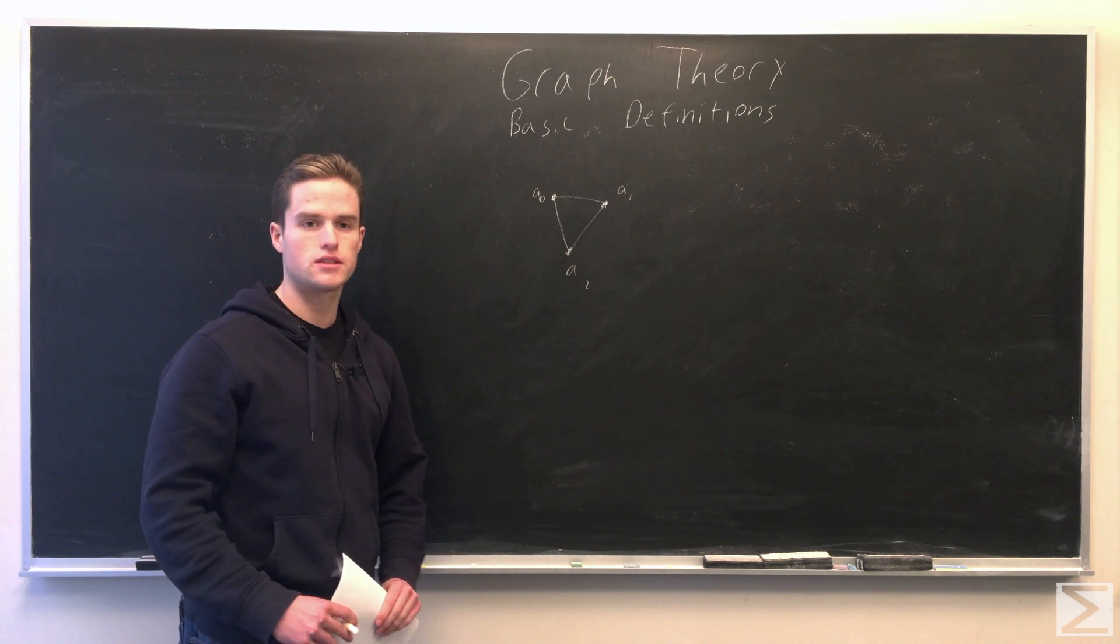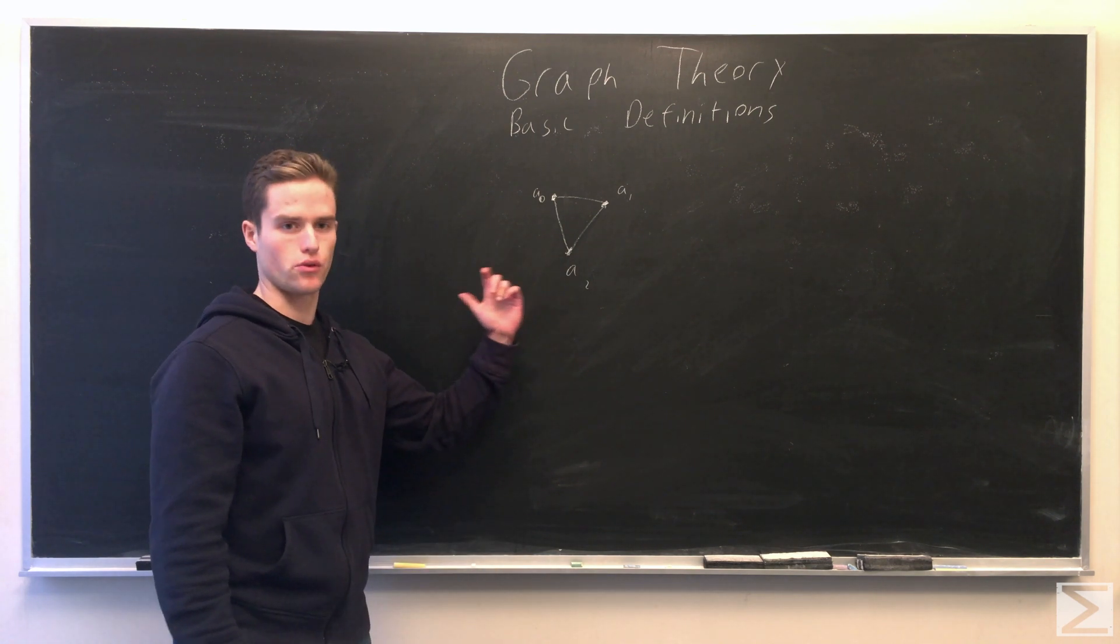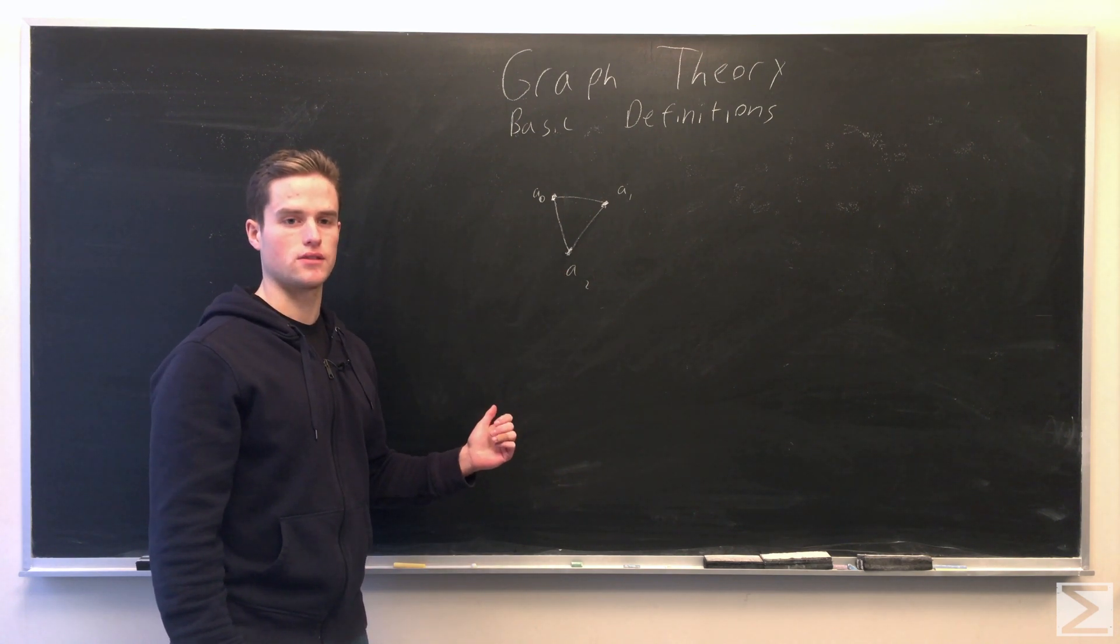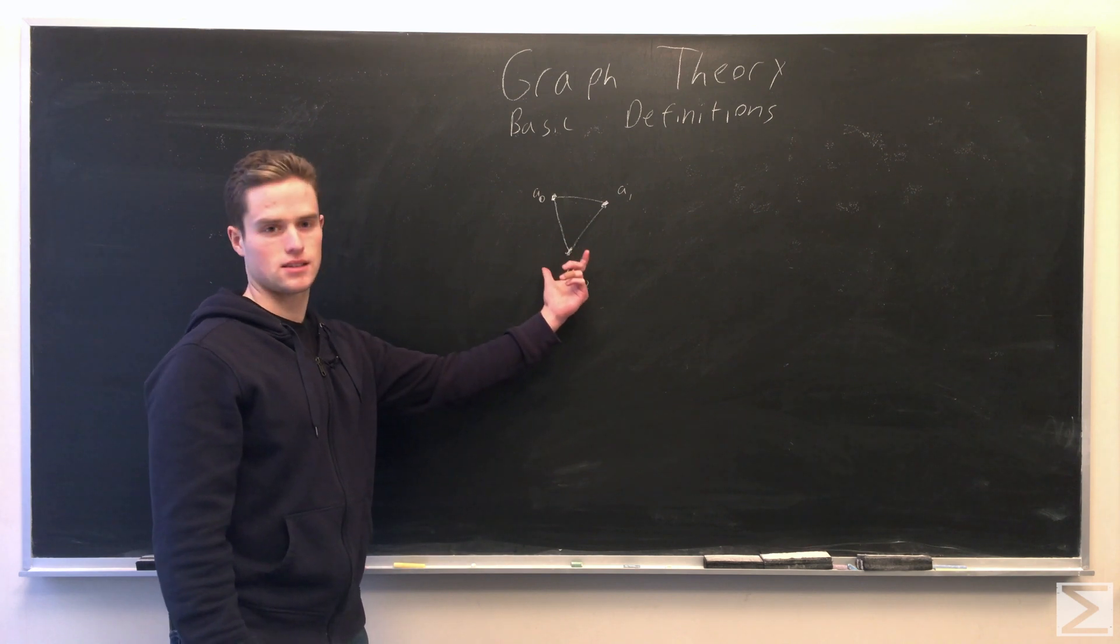So the number of vertices in a graph is the order of the graph, so this has order 3. The number of edges in a graph is the size of the graph. This has size 3.